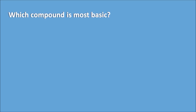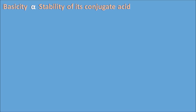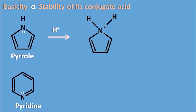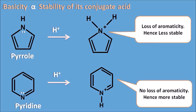Which compound is most basic? Options: A. Pyridine, B. Pyrrole, C. Pyrrolidine, D. Imidazole. The right answer is C, Pyrrolidine. Basicity is directly proportional to the stability of the conjugate acid. Comparing pyrrole and pyridine: on protonation, pyrrole loses its electron pair and loses aromaticity, making it less stable. Pyridine preserves aromaticity even after losing the electron pair, so pyridinium ion is more stable — therefore pyridine is more basic than pyrrole.